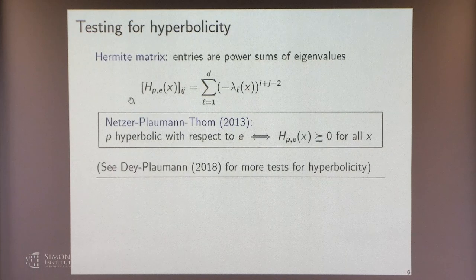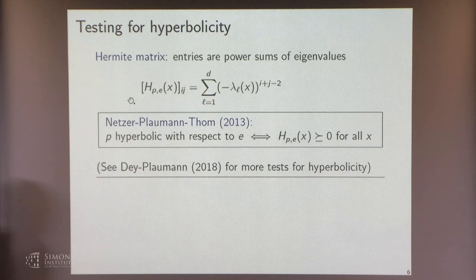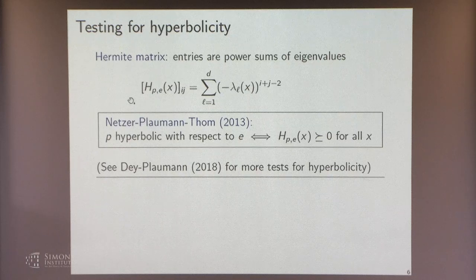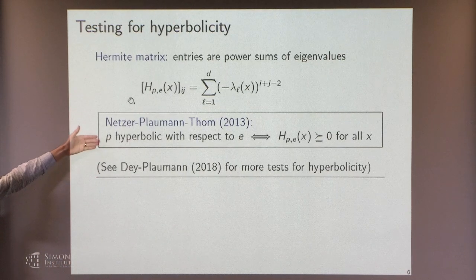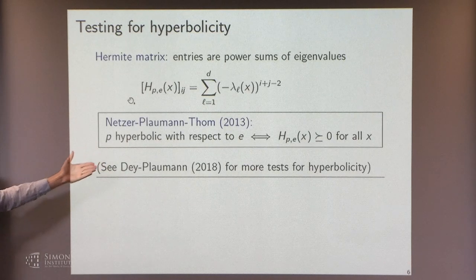That's my quick intro to hyperbolic polynomials, the corresponding convex object—the hyperbolicity cone—and this class of optimization problems: hyperbolic programs. Now let's talk a little bit about testing for hyperbolicity. If you give me a homogeneous polynomial in n variables of degree d, you want to decide whether it's hyperbolic with respect to some direction. This will lead into a way of producing non-negative polynomials naturally from hyperbolic polynomials.